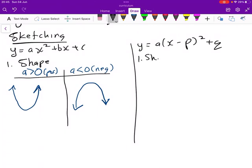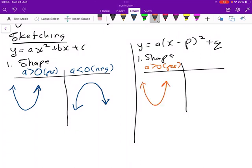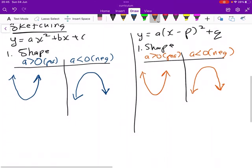The same would apply here. We also want to look at the shape. And here again, if our a is positive, we expect a smiling face. And if a is negative, we expect a frowning face. So that is very much important for you to remember.